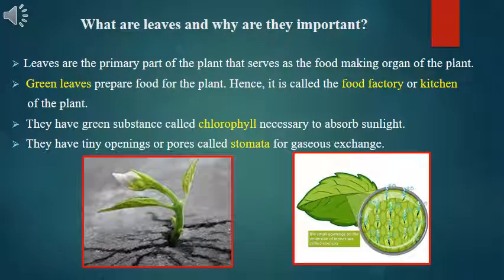What are leaves and why are they important? Leaves are extensions of a plant's stem. They are the primary part of the plant that serves as a food-making organ. Green leaves prepare food for the plant, hence it is called the food factory or kitchen of the plant. They have a green substance called chlorophyll, necessary to absorb sunlight, and tiny openings or pores called stomata for gaseous exchange.